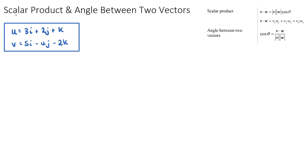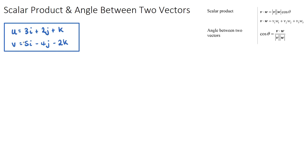In this video we are going to have a look at the scalar product of two vectors and how it relates to the angle between the two vectors. This is a very common key concept in every IB Maths exam. I've given you two vectors, vector u and vector v, both in i, j and k form. In column form, vector u is 3, 2, 1 and vector v is 5, negative 4 and negative 2. I'm going to find the scalar product of these two vectors, find the answer first, and then explain what it means.